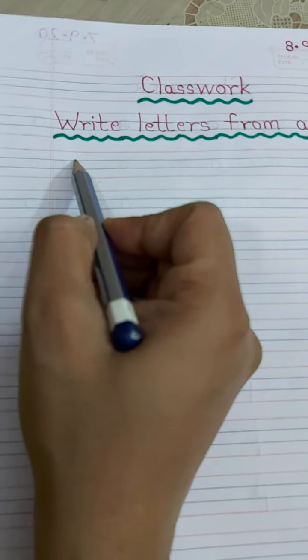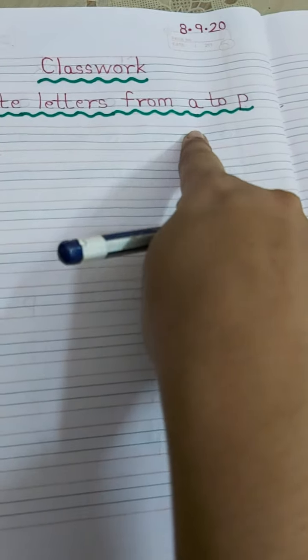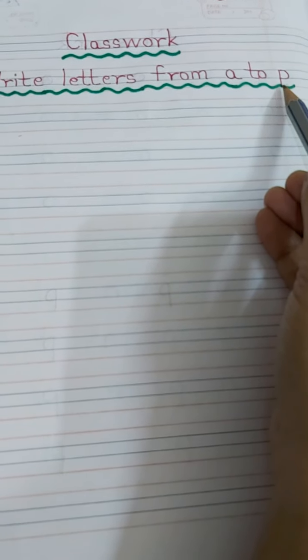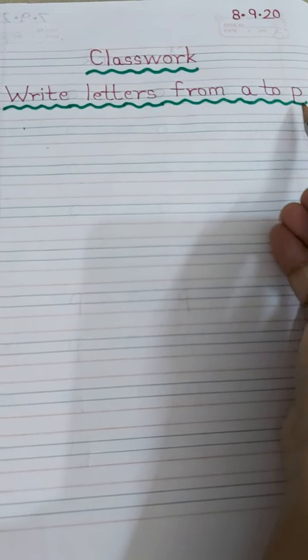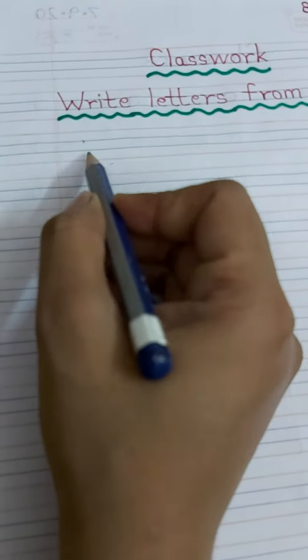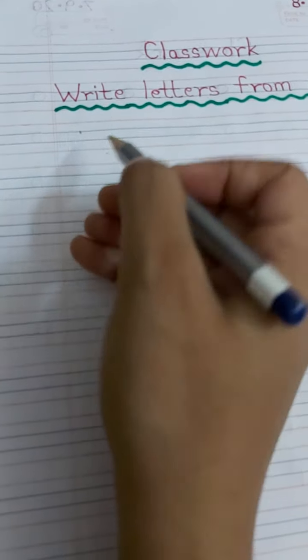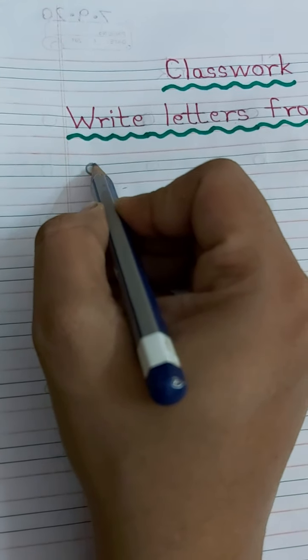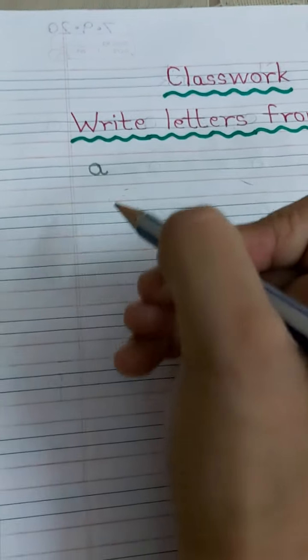Then on this line, first of all, you have to write what? Capital or small? Which A is this? Small A. And which P is this? Small P. So you have to write small A to P. Now first of all, place your pencil on the black line. What you have to make? Letter A.